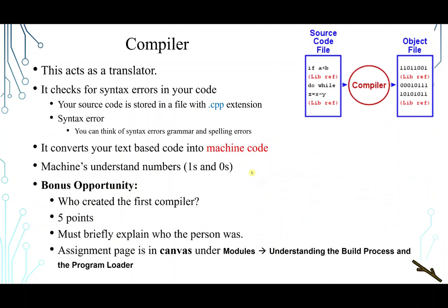Okay. The second thing after the source file, and after we now know you're going to use higher-level language, we have a compiler. The compiler acts as a translator. It checks for syntax error in your code. And usually your source code is stored in a file with the .cpp extension. The compiler takes that file and checks the error, checks for syntax error.